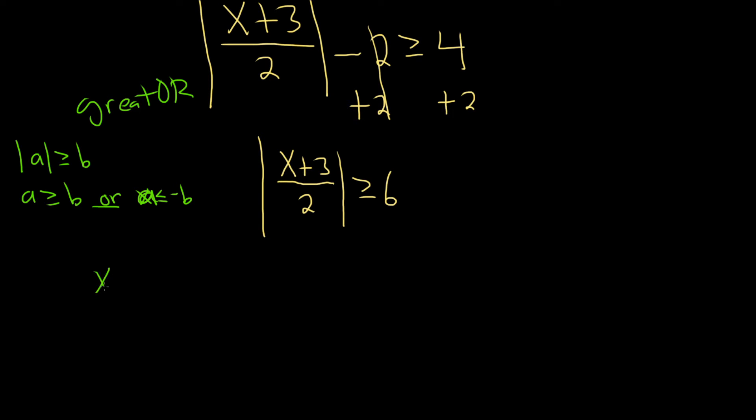So here, it's x plus 3 over 2, greater than 6, or greater. Then you flip the sign and you put a negative. So you keep it, flip it, put a negative. Keep it, flip it, put a negative.